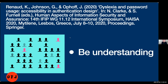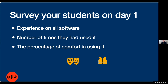Survey your students on day one — their experience on all software, the number of times they've used it, their percentage of comfort. I use some humor in those surveys; I've moved from being very text-based to using icons. One of them is a life raft symbol meaning 'help me.' If students know that's an option, they will use it and tell you if they're having difficulty. The fact that I ask — whether they're 100% okay, 50% okay, so-so, or need help — means I'm expecting help questions, and students have used them and contacted me more.